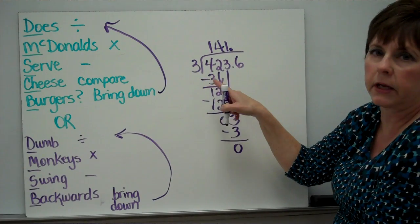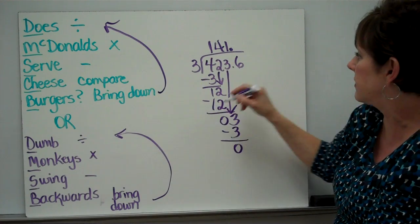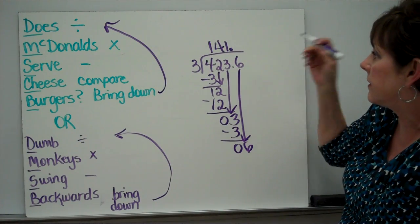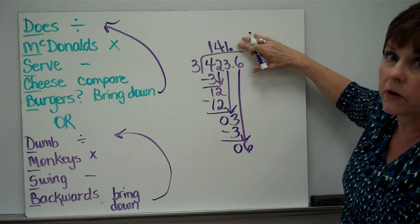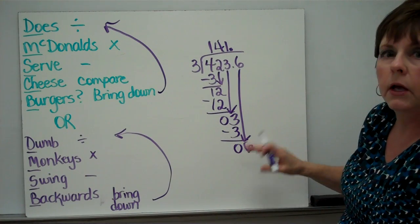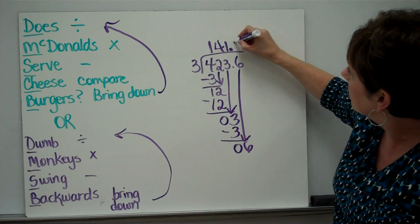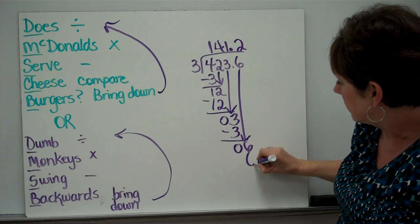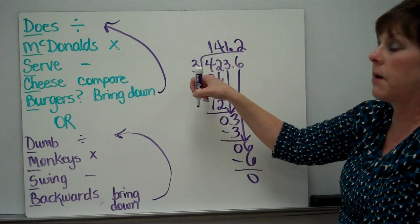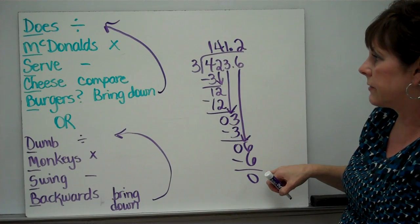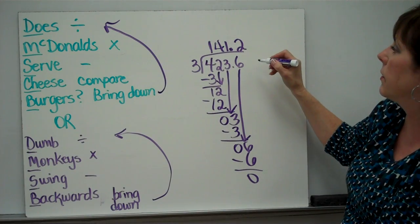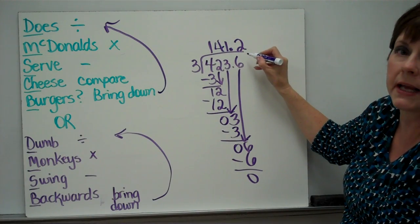Compare. Can 0 be divided by 3? No. Is there another number to bring down? Yes. Bring it all the way down. Now, because this is on the other side of the decimal point, you're going to put your answer on the other side of the decimal point. How many times can 6 be divided by 3? 2 times. 2 times 3 is 6. Subtract. 0. Compare. 0 cannot be divided by 3. And is there anything left to bring down? No. So, our answer or our quotient is 141.2. And we have to put that there or it's not going to be correct.